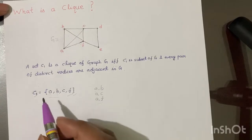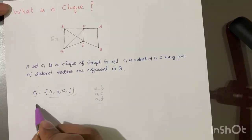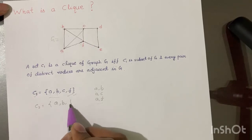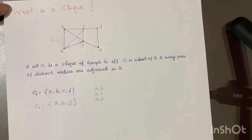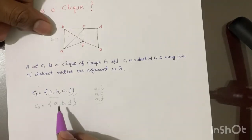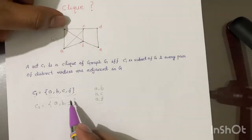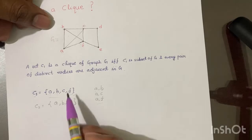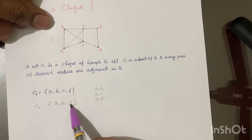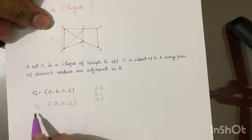What could be another possible clique in the graph? You could write C2 as A, B, and F. This will also be a possible clique of graph G, because A and B, A and F, they are adjacent in the graph G. Similarly B and A, B and F, F and A, and F and B. So C2 will also be a clique.